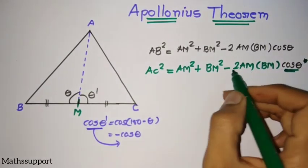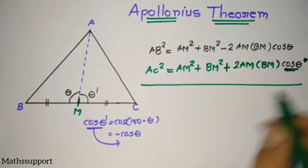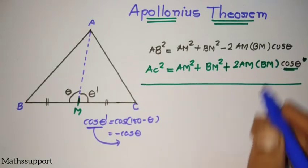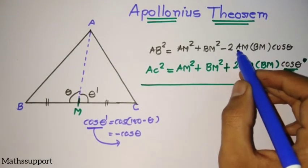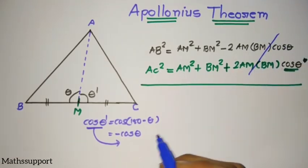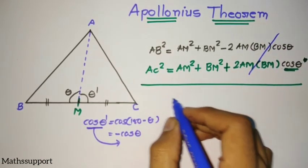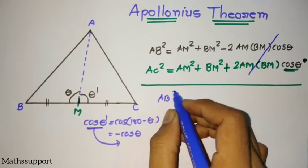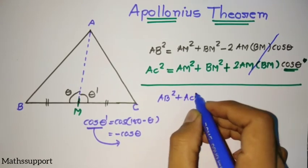Now I am adding these two equations. This is minus 2AM·BM·cosθ and this is plus 2AM·BM·cosθ, so they cancel. The addition gives AB² + AC² equals 2AM² plus 2BM².